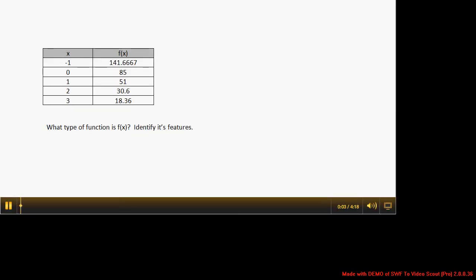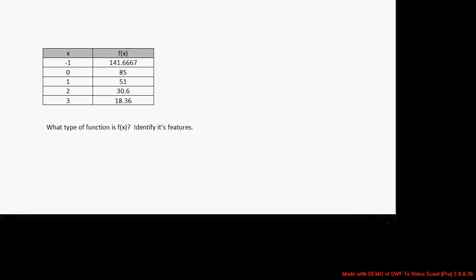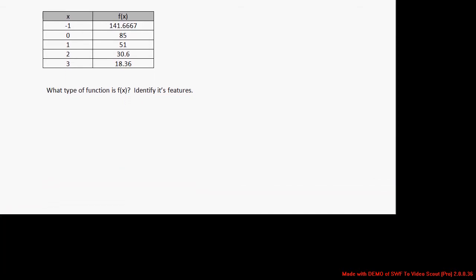In this problem, we're given a table and we're asked to identify the type of function that f of x is and then identify the important features of that function. First thing we want to do is identify the type of function.